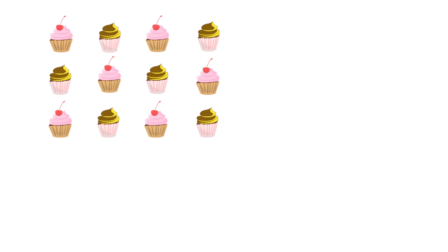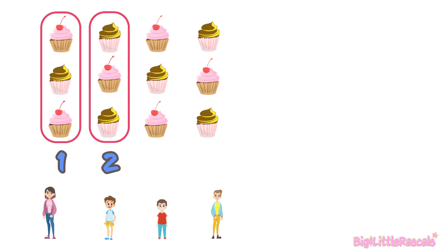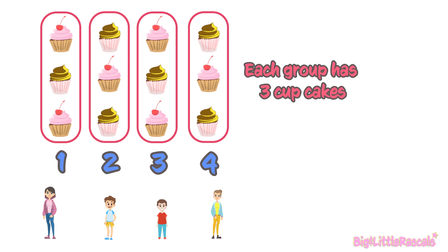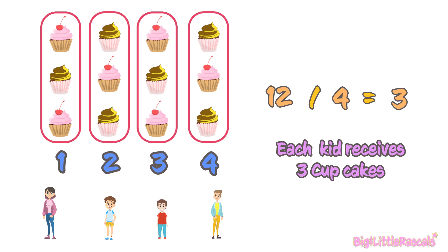Let's get more familiar with more examples. 12 cupcakes divided for 4 kids — so how many cupcakes will each kid get? Let's group these 12 cupcakes into 4 groups equally. Each group will be given to each kid: 1, 2, 3, 4. Let's count how many cupcakes are in each group. Each group has 3 cupcakes. So 12 divided by 4 is equal to 3. Each kid will get 3 cupcakes.